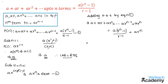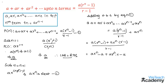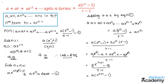Now let us take the LCM as r minus one. We get a into r to the power n minus one, plus ar to the power n into r minus one, all divided by r minus one. Multiplying a with the group r to the power n minus one gives ar to the power n minus a. Multiplying ar to the power n with r minus one gives ar to the power n plus one minus ar to the power n, divided by r minus one. The ar to the power n and minus ar to the power n cancel. Adding the powers of r gives ar to the power n plus one minus a, divided by r minus one. Taking a as a common factor, we get a into r to the power n plus one minus one, divided by r minus one.